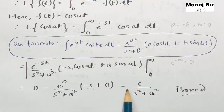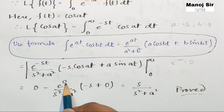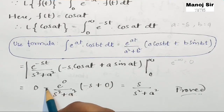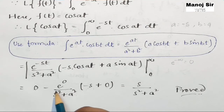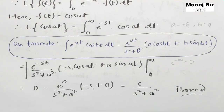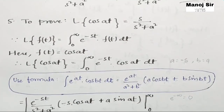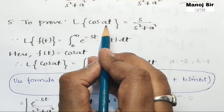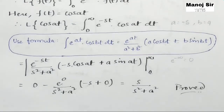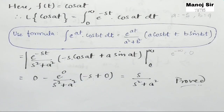Since the upper limit is zero, we have zero minus the lower limit result: 1 upon s² plus a² into [minus s]. So it is minus 1 times minus s, which gives plus s upon s² plus a². Finally we have proved the second part: the Laplace transform of cos(at) equals s upon s² plus a². Thank you so much.